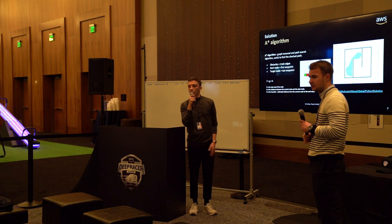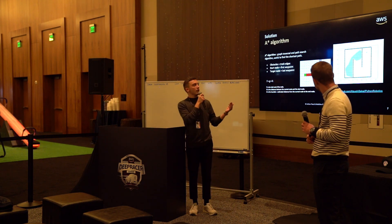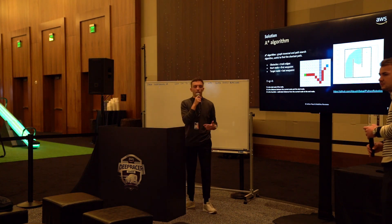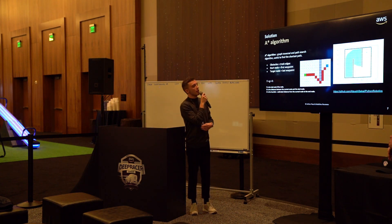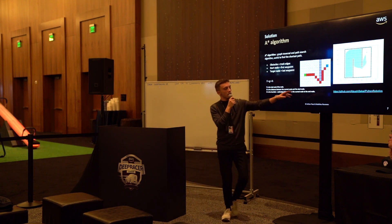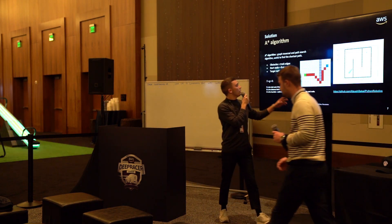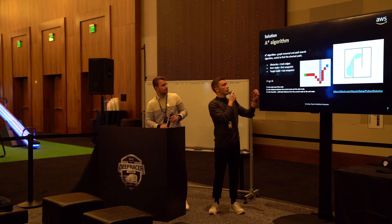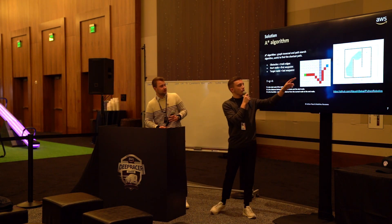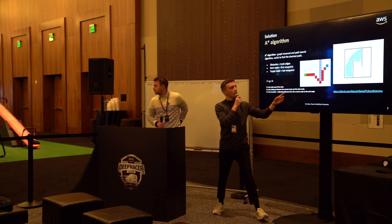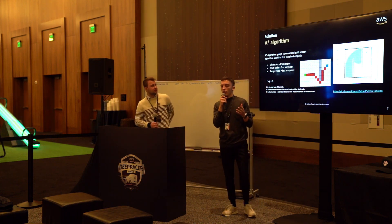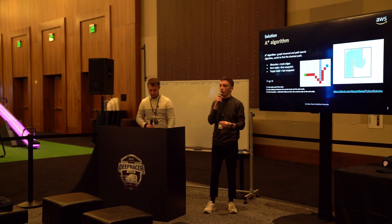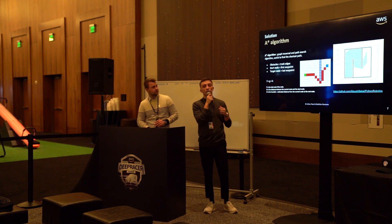We implemented the A* algorithm. The A* algorithm is one of the most popular algorithms in pathfinding techniques. In our case, the obstacles that we see here — which are the borders — will be the track hedges. How does it work? There is a start node and a target node. In our case, the start node will be the first waypoint of the track, and the target node will be the last.